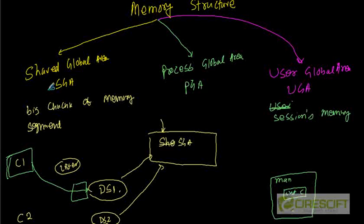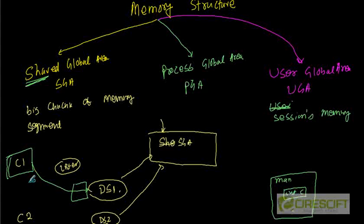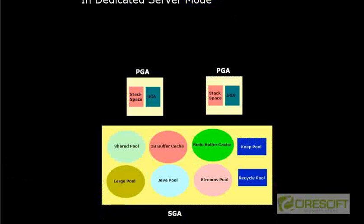Here is the summary: as the name says, SGA can be shared across different processes, whereas PGA is private to the process, and UGA is private to the session or user session.